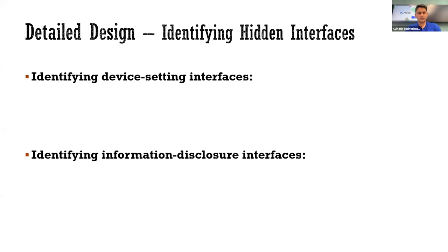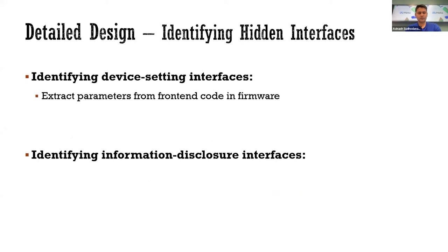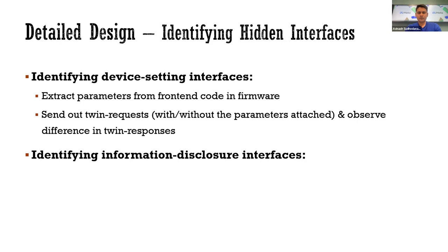In the set of unprotected interfaces, we identify the two types of hidden interfaces. For device setting interfaces, we first extract parameters from the front-end code in the firmware. Then we send out the twin requests — one with the parameters and the other without — and observe if there is any difference in the responses. If so, it indicates that the request with the parameter takes effect on the device side, by either changing the device setting or inquiring the status of the device.